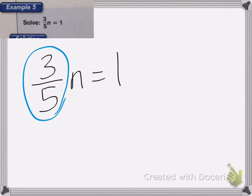This is the last one, and it deals with multiplication. So we have 3 fifths times by n equals 1. Now, if you remember, if I multiply two fractions together and it equals 1, it means it's the reciprocal of my first fraction. So the reciprocal of 3 fifths is 5 thirds.